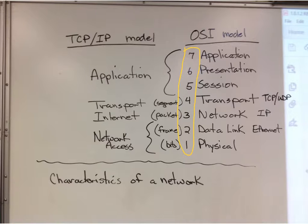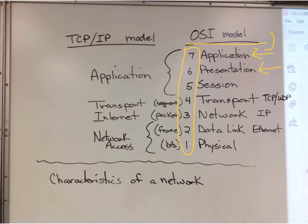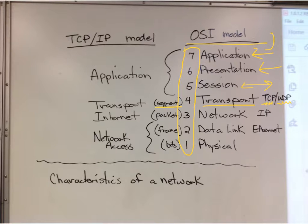We actually started with the application layer — that's hooked into some app. Then we talked about presenting the data, getting the data in the right form, for example ASCII, and this is where we would do encryption. We set up a session with each end, then figure out how we're going to transport the data — reliable or unreliable — and the data is split into a segment, broken into manageable parts.